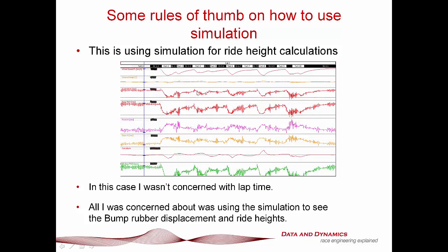This is an example of how you use the lap time simulation where I actually couldn't give a stuff about what the actual lap time is. What I was doing here was some work for a time attack customer where all I was focused on was ride height calculations. In particular, take a look at these channels here — front ride height, rear ride height, and the bump rubber displacement. What I was doing was going through and taking a look at, right, this is approximately where I know the performance is going to be — what are the bump rubbers doing? How do I spec out the bump rubber to make sure the thing isn't bottoming on the ground?